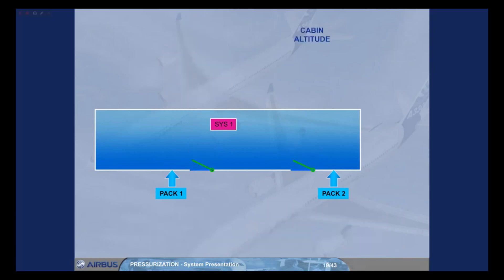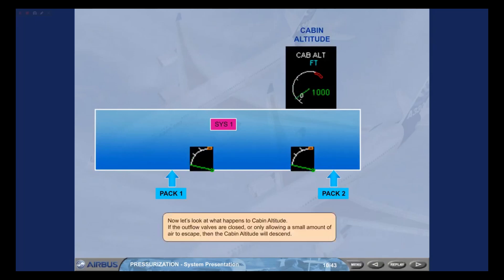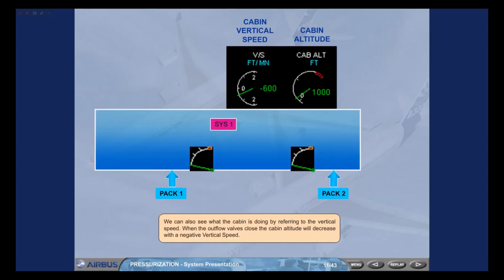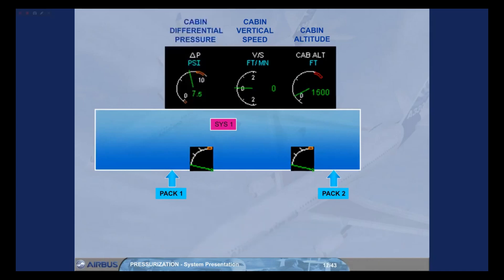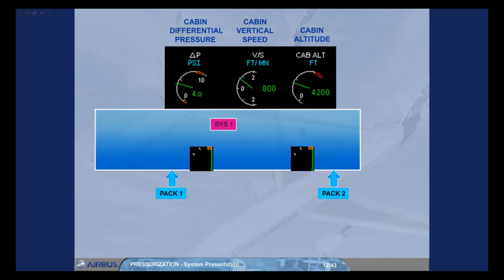Now let us look at what happens to cabin altitude. If the outflow valves are closed or only allowing a small amount of air to escape, then the cabin altitude will descend. We can also see what the cabin is doing by referring to the vertical speed. When the outflow valves close, the cabin altitude will decrease with a negative vertical speed. If the outflow valves are fully open, a lot of air is allowed to escape. The cabin pressure will decrease and the cabin altitude will increase with a positive vertical speed.